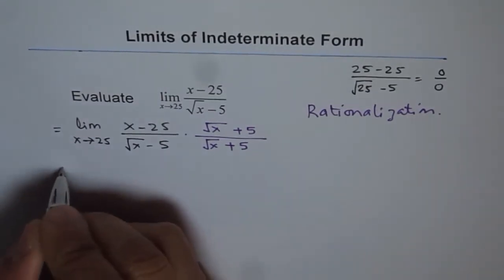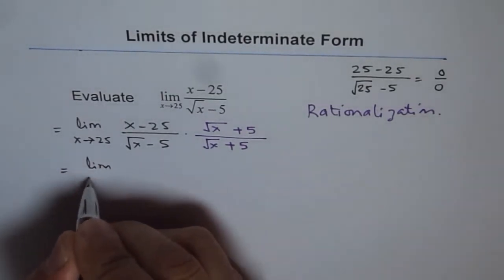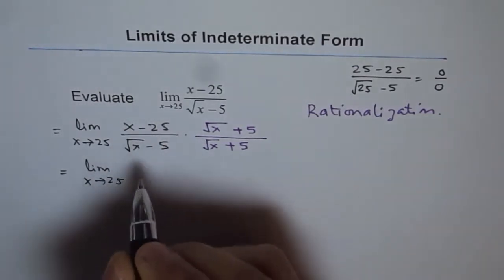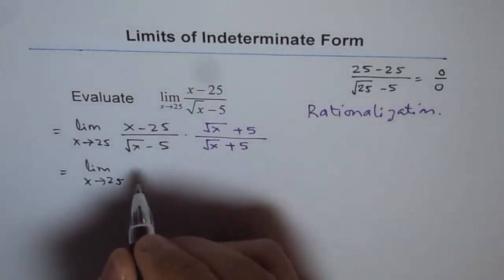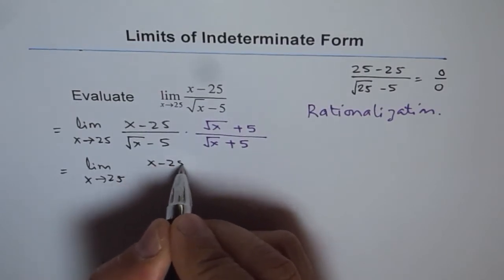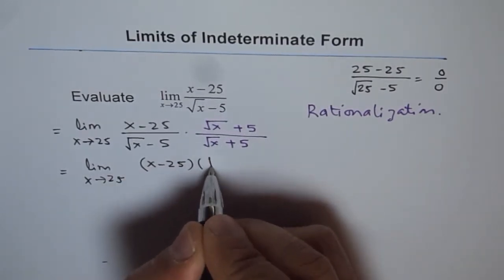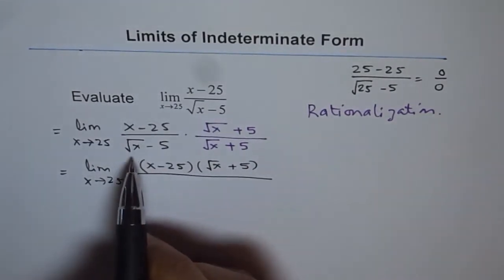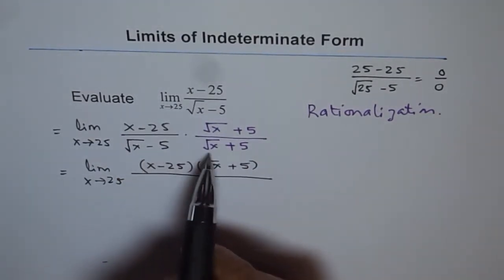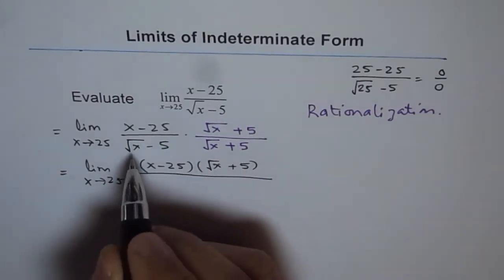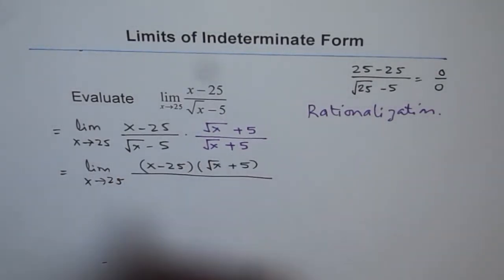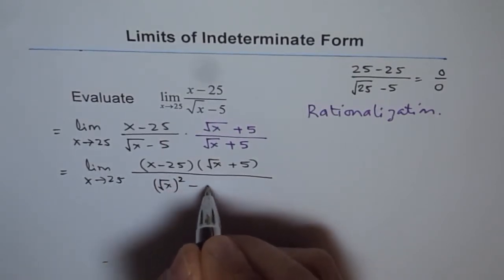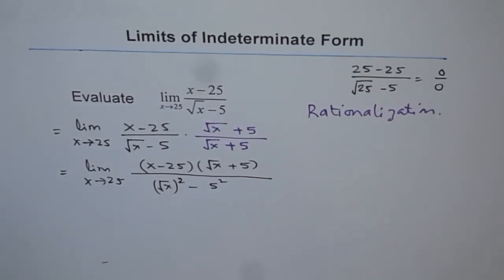Now, so that gives us limit x approaches 25, and in the numerator, we need not expand. So we will write numerator as such. That is a rule. Square root x plus 5 divided by, now this is kind of a minus b times a plus b. So we get a squared minus b squared. That is what we get.